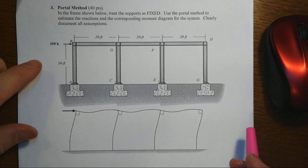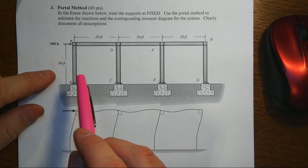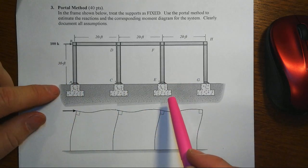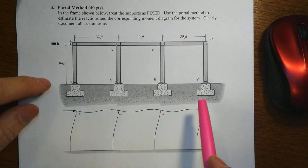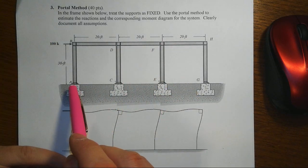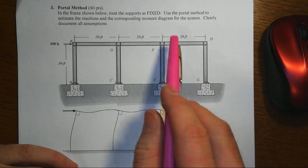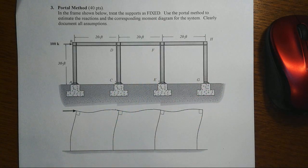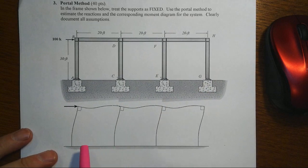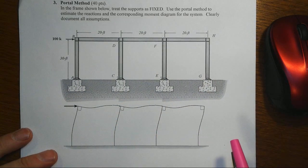And so we've been given here a three bay frame, single story, all the frames are the same width and the same height. They also have what looks to be fairly robust connections to the foundation and we're asked to treat those supports as fixed.